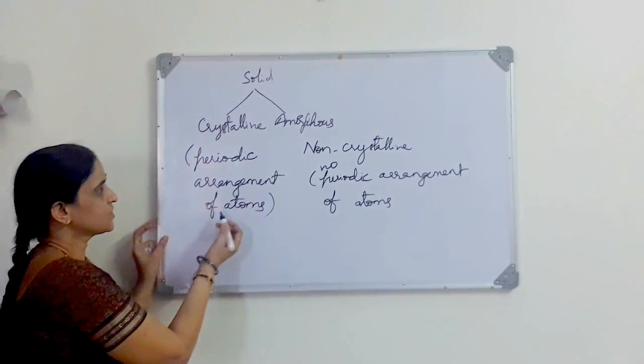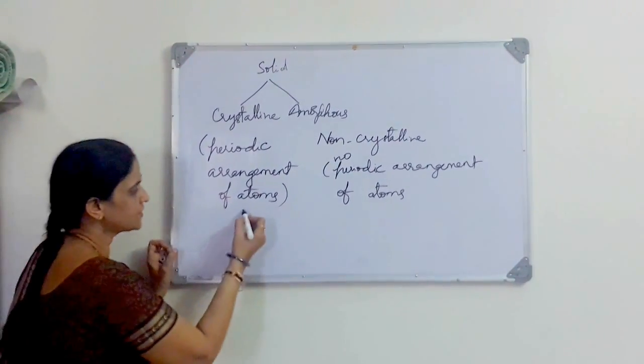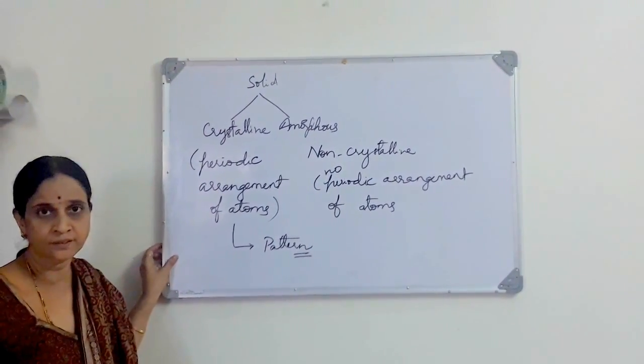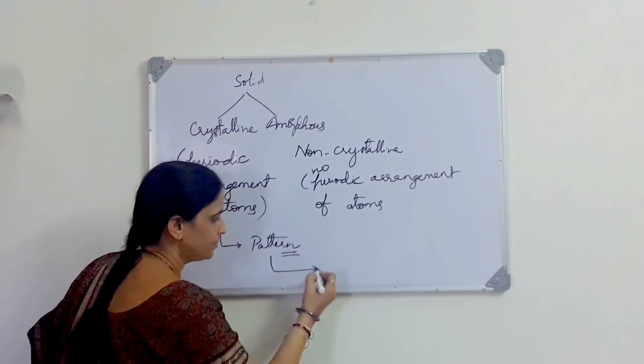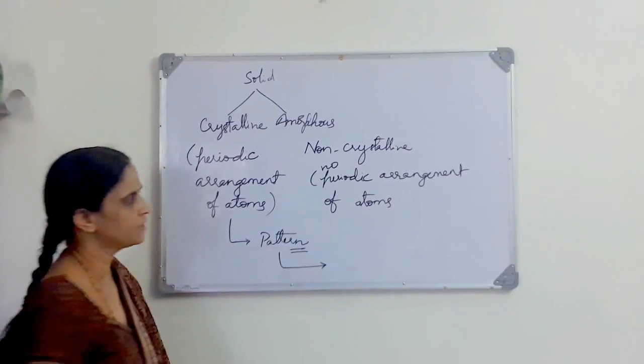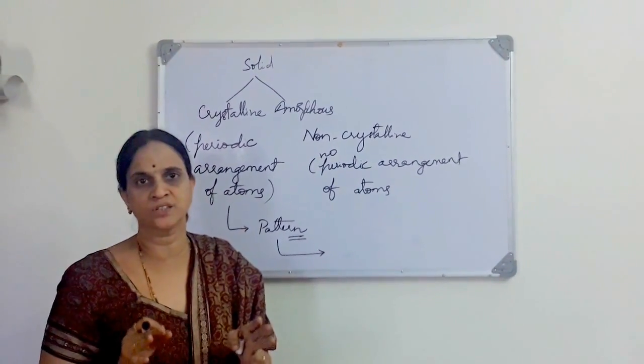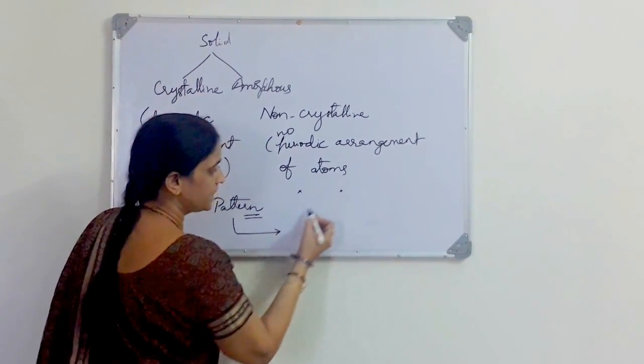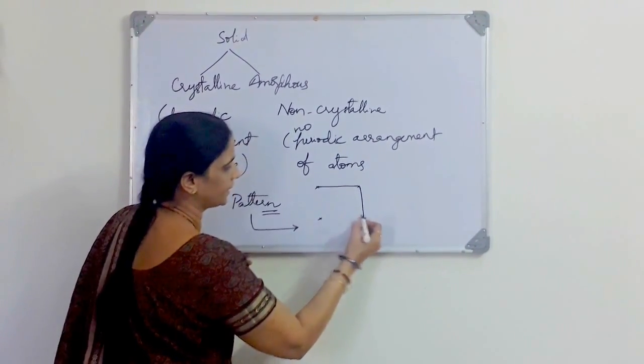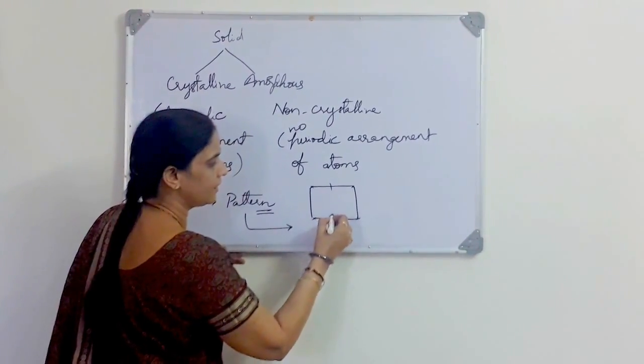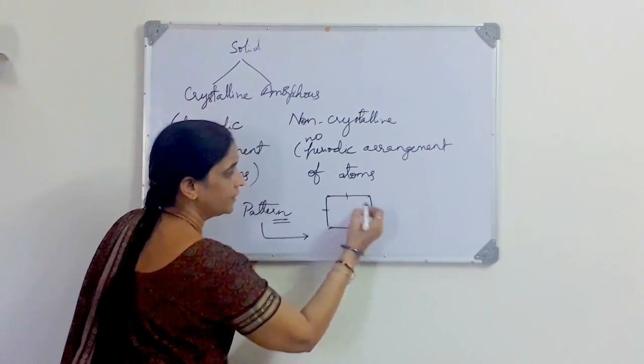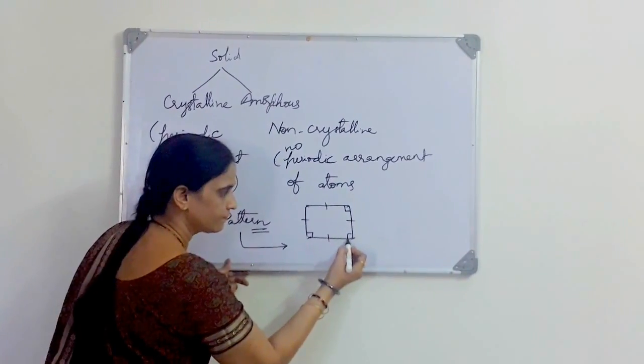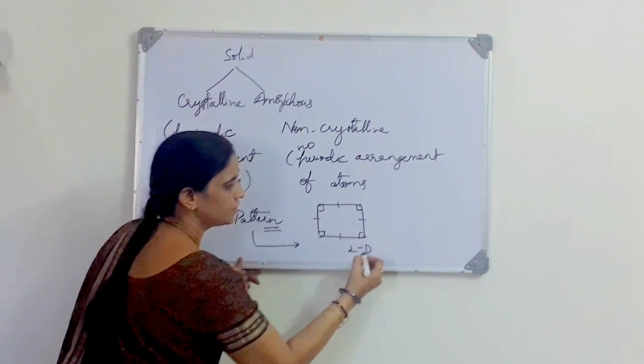So this crystal, with periodic arrangement of atoms, follows certain patterns. This pattern is explained in this class. Let me suppose I want to show you one two-dimensional structure, a rectangle. See, this is A, this is B, this is C, and we all know that the opposite sides of the rectangle are parallel as well as equal. The corners, all four corners, hold 90 degrees each. This is the 2D structure of a rectangle.